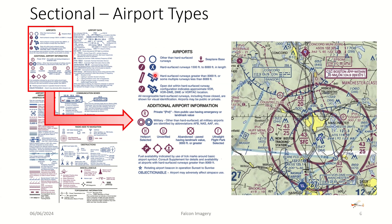Larger runways — 8,069 feet and higher — will have rectangular shapes representing the magnetic heading of the runway. If there are multiple runways, you can see them showing two different runways. The open dot you see on some airport depictions represents VOR, DME, or VORTAC services — ground-based navigation aids on the airport surface.